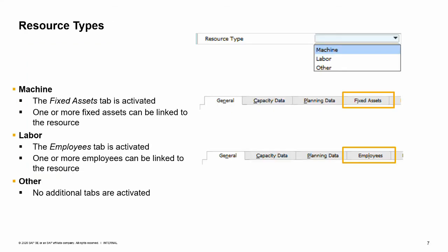Let us start with the resource type. You can select the relevant resource type — machine, labor, or other — in the resource type field in the header of the resource master data window. When you select machine, the fixed assets tab is activated and one or more fixed assets can be selected. When you select labor, the employees tab is activated instead, and you can associate employees with this resource. The other type is used for resources that are not fixed assets or employees. Note that to work with fixed assets, you first need to activate this feature in the company details window under the administration system initialization menu path.